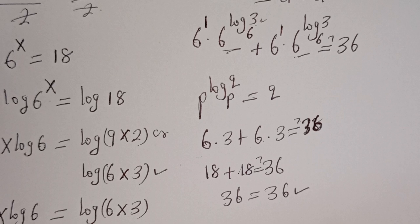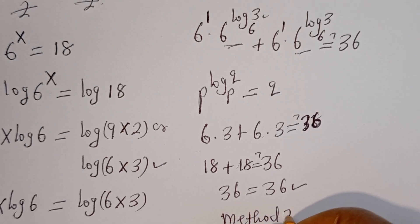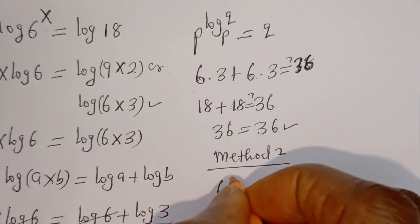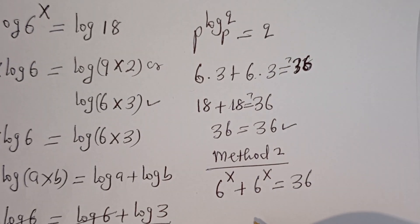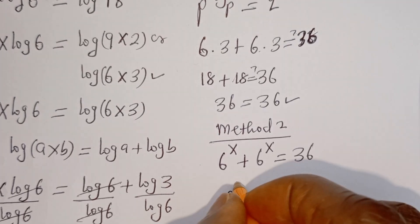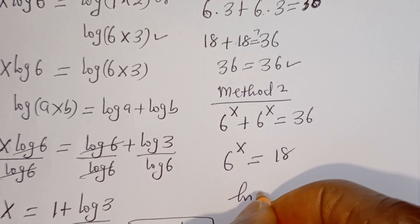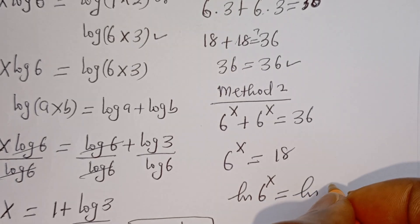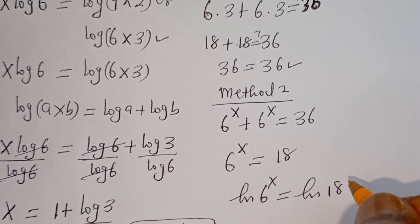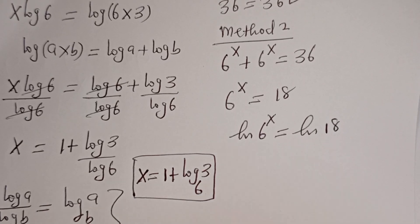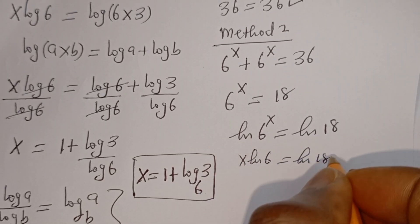Now let's consider Method 2. We are going to solve this in less than a minute. From the given equation, 6 to the power of x plus 6 to the power of x equals 36, we simplify to 6 to the power of x equals 18. Let's take the natural log of both sides: ln of 6 to the power of x equals ln of 18, giving us x times ln 6 equals ln 18.